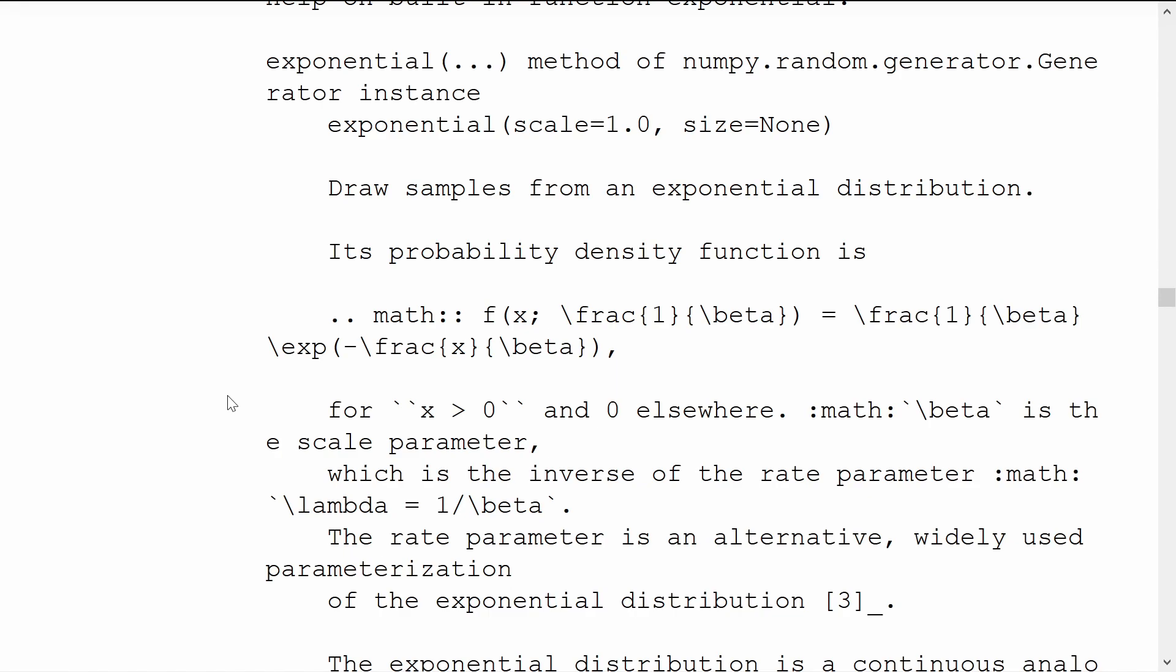As I expected, they defined it by the scale parameter beta rather than the rate parameter lambda. It even says in the notes here, where beta is the scale parameter, which is the inverse of the rate parameter. The rate parameter is an alternative, widely used parameterization of the exponential distribution.